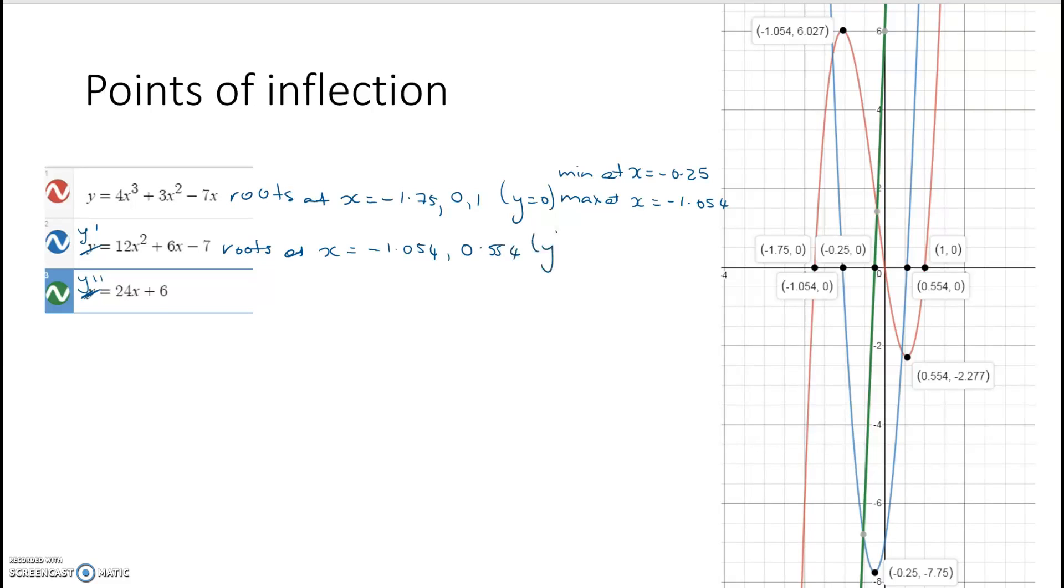Now, this is where y dash is equal to 0, starting to see the connections, I hope, and it has a minimum at negative 0.25.